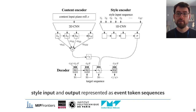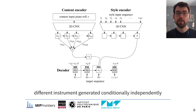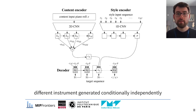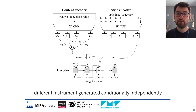On the other hand, the style input and the output are represented as sequences of event tokens, which are more suitable for generation using recurrent neural networks. Since generating multiple instruments jointly is challenging, we avoid doing this by assuming conditional independence between different instruments. This allows us to train the model to generate a single instrument at a time, always conditioned on the corresponding track of the style input. The generated tracks are then put together in a post-processing step.